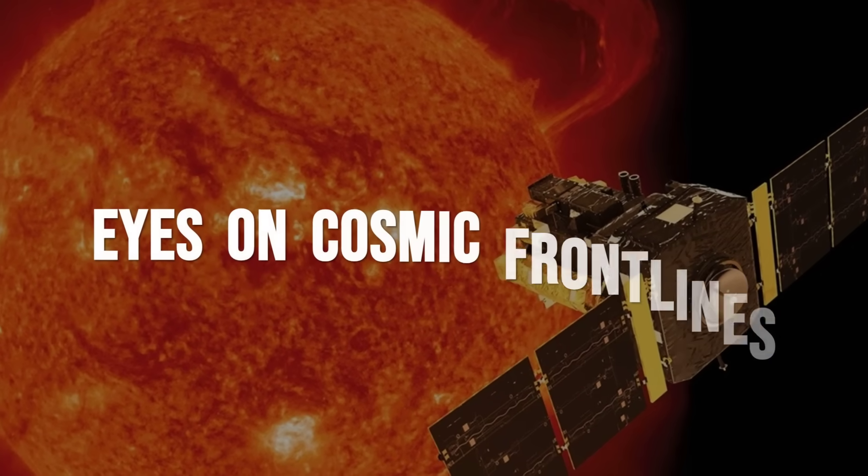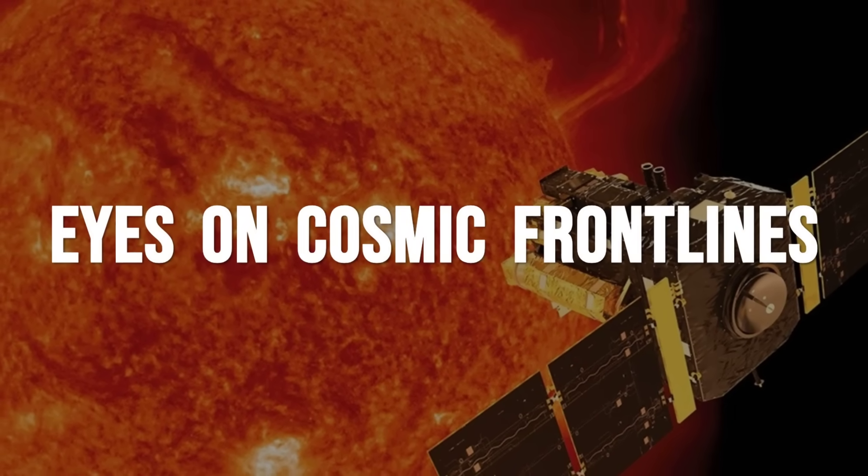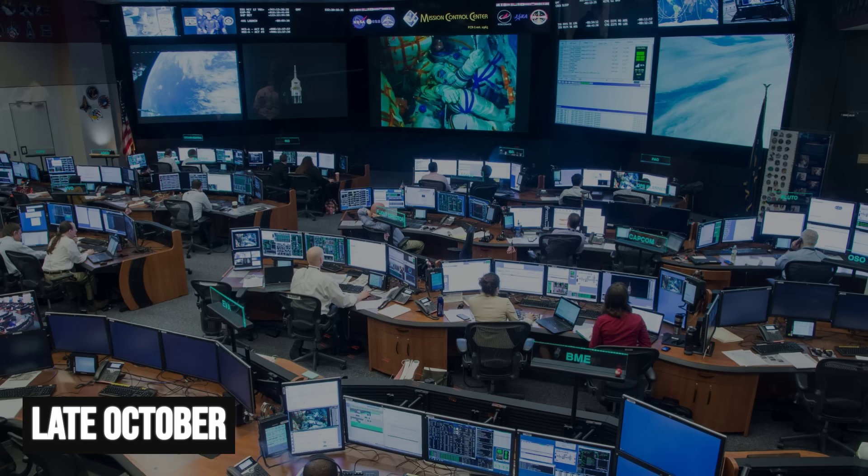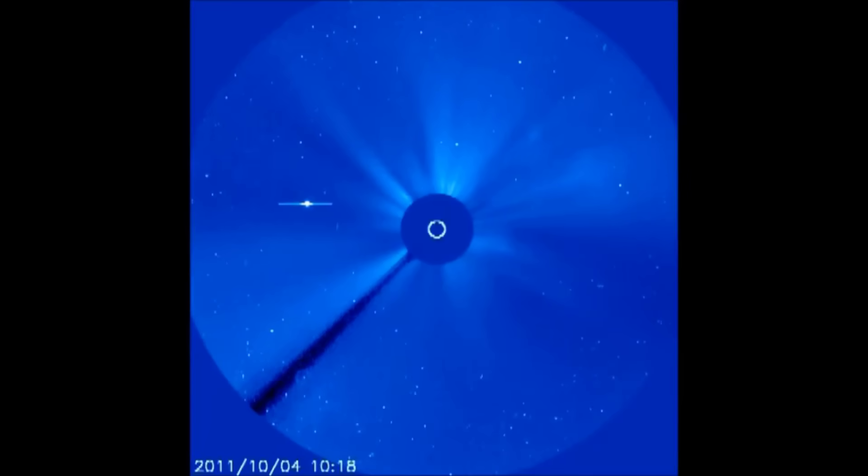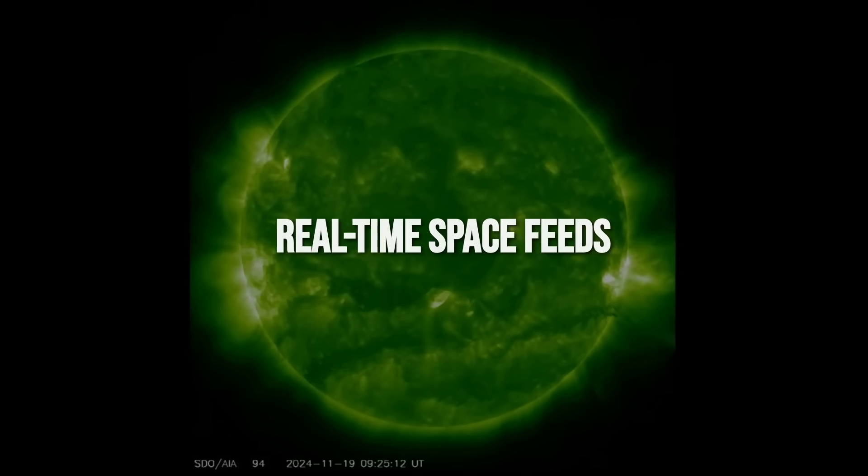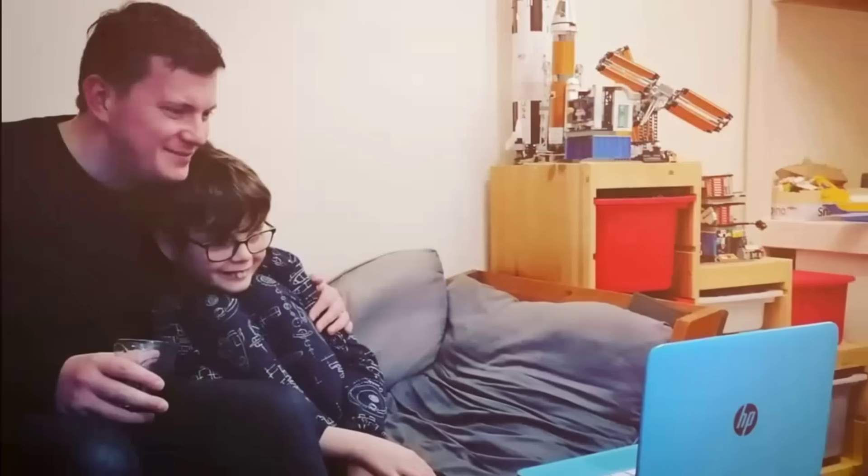SOHO and Stereo are the workhorses for solar system monitoring, especially when comets get close to the sun. During late October, their coronagraphs will be watching the region around the sun almost nonstop. If 3I-Atlas brightens enough, these feeds might catch its tail reacting to solar storms or even show a dramatic tail disconnection event. Both missions post images to public portals within hours, so anyone can follow along in near real time.